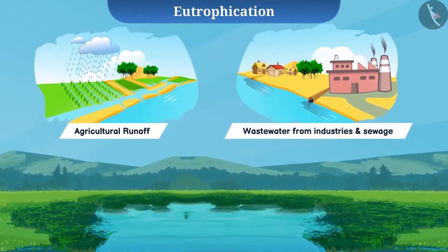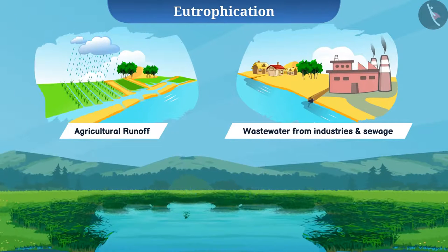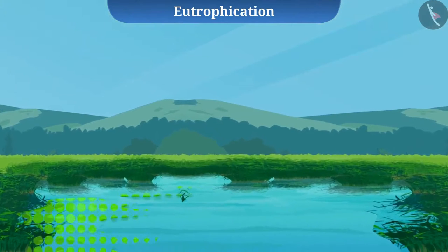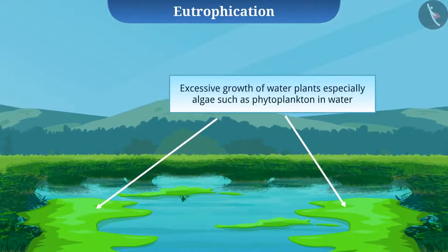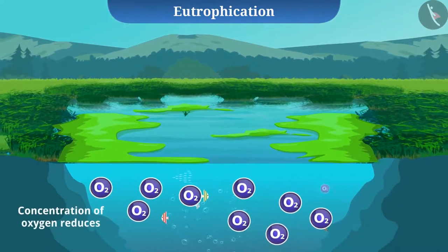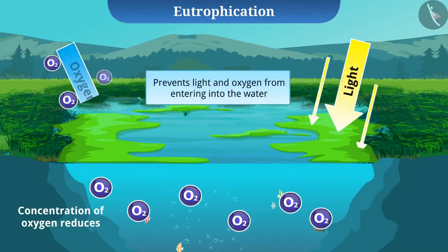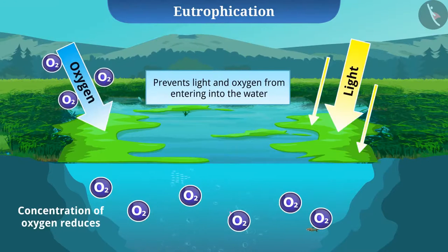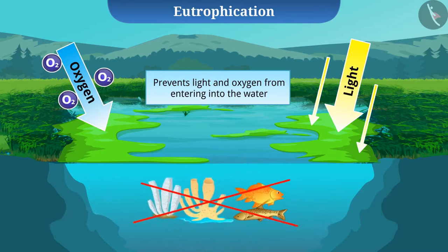Due to this, the concentration of nutrients increases in the water. As water becomes overly rich with nutrients, there is excessive growth of water plants, especially algae such as phytoplankton. This rapid growth of algae in water is called a bloom. Such excessive algal growth covers the surface of water, reduces the concentration of oxygen, and prevents light and oxygen from entering the water. As a result, aquatic plants and animals die. This is called eutrophication.